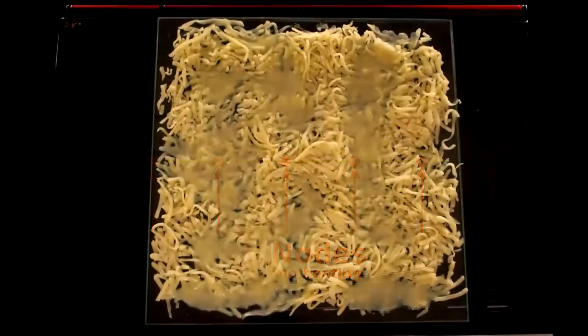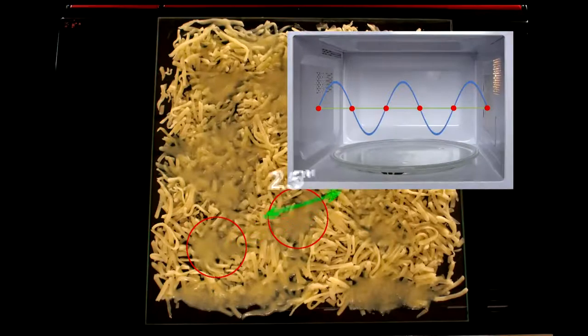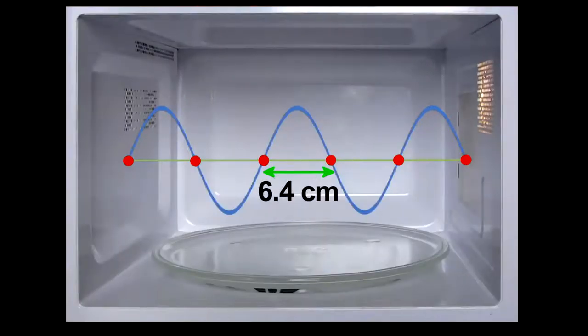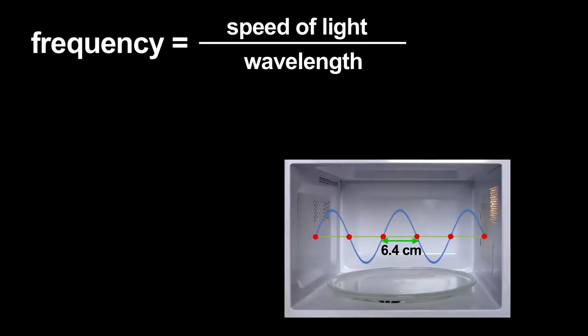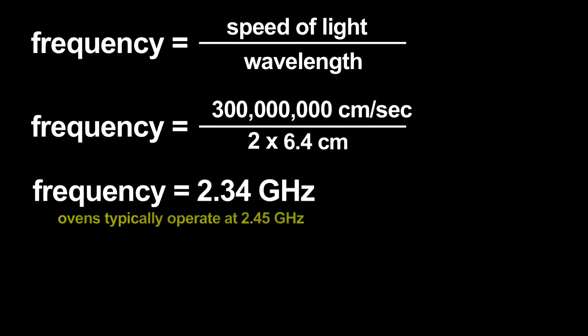If I measure the distance between melted cheese spots, I find about two and a half inches. That would be half the wavelength, the distance between nodes, and is pretty close to the actual wavelength of microwave radiation used. Using that wavelength, I can estimate the microwave radiation's frequency. The frequency is related to the wavelength by the speed of light. I get an answer that only has a four or five percent error. Not bad for this primitive measurement.